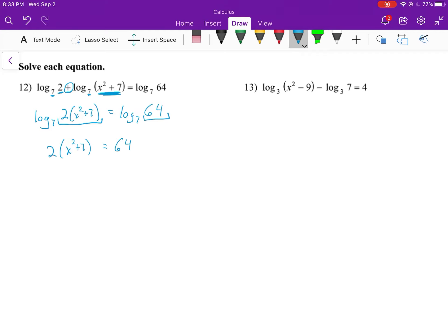We can distribute the 2, or divide both sides by 2 - it doesn't really matter. Let's distribute in this case. So 2x² + 14 = 64. We'll subtract 14 from both sides, which gives us 2x².